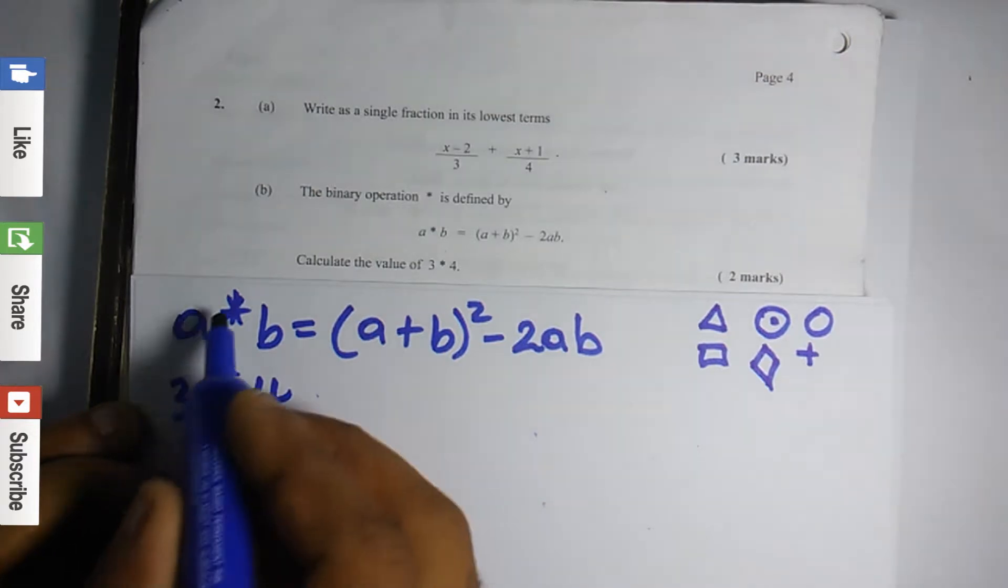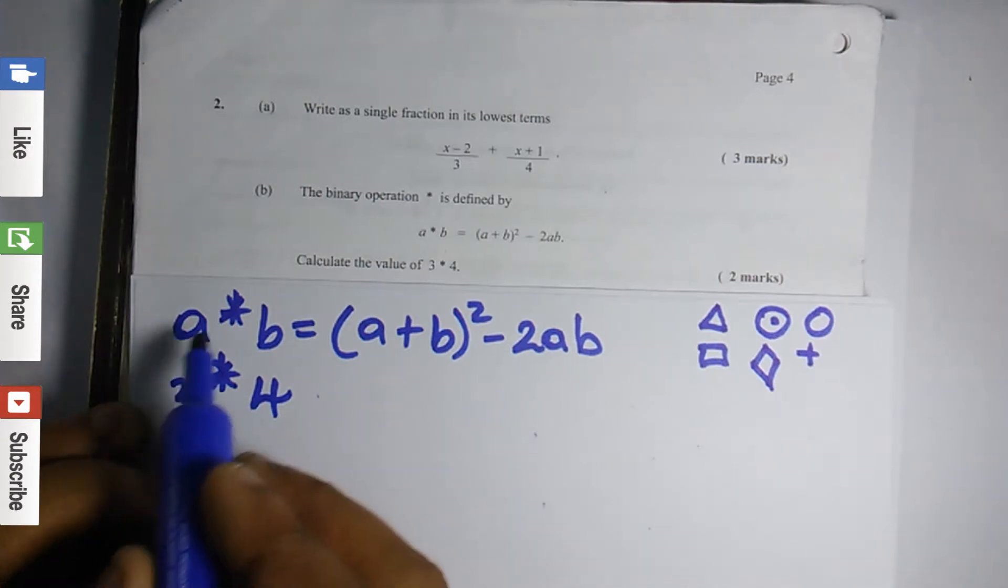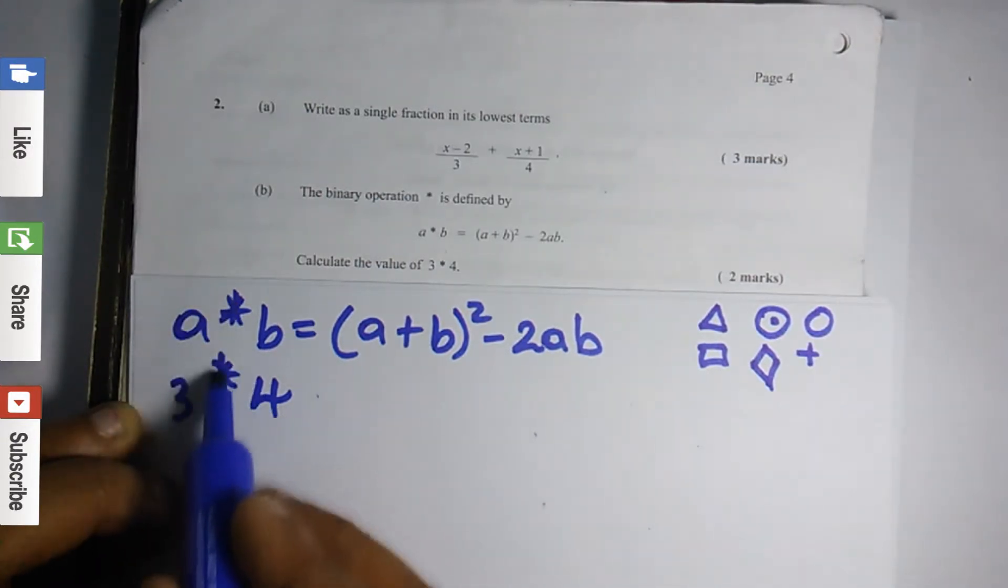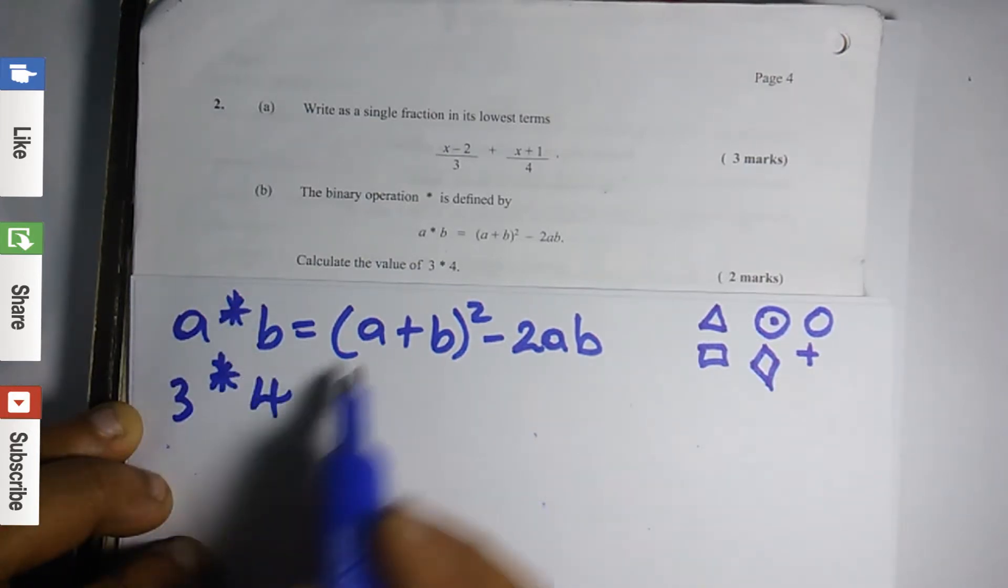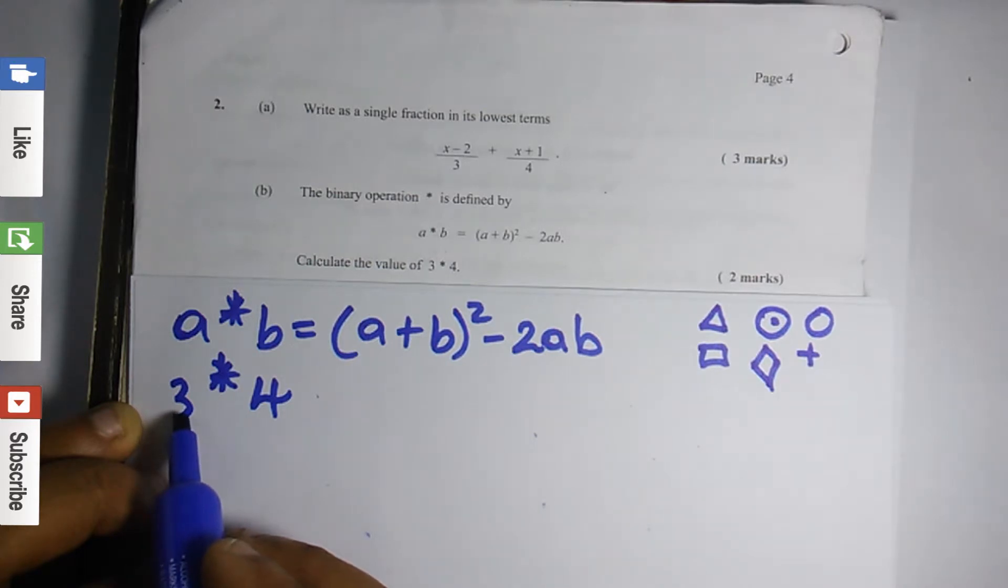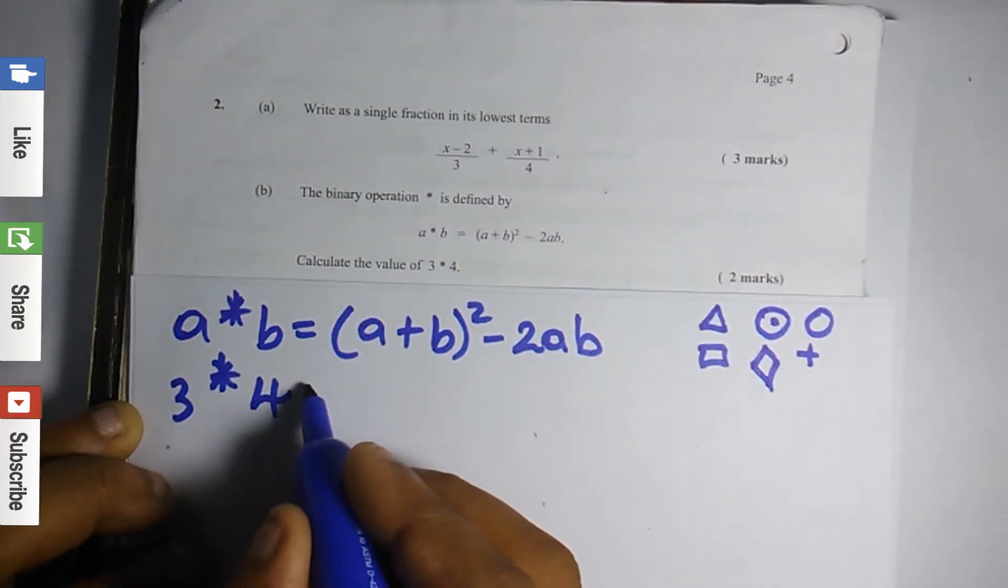Now, looking at the question, we have a star b, 3 star 4. If you realize, the stars are matched up with each other. So that means a is matched up with 3, b is matched up with 4. Wherever I say a, I'm going to put 3. Wherever I say b, I'm going to put 4.